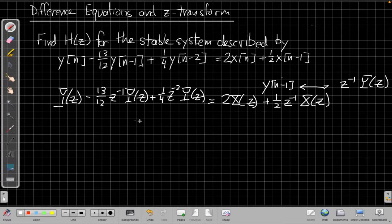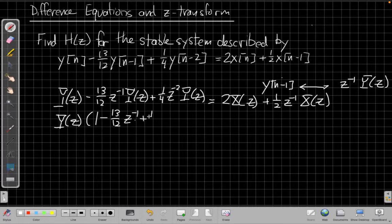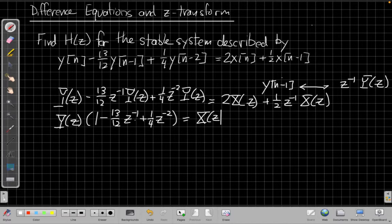And then the next step should be familiar from when we did similar problems with Fourier transforms, which is we're going to factor the Y(z) and X(z) out front. So if I pull a Y(z) out front, I get [1 - (13/12)z^(-1) + (1/4)z^(-2)], and I pull the X(z) out front on the right-hand side of the equation and I get X(z) times [2 + (1/2)z^(-1)].